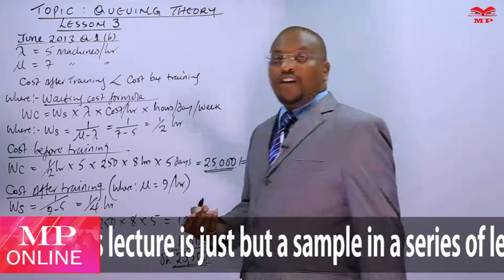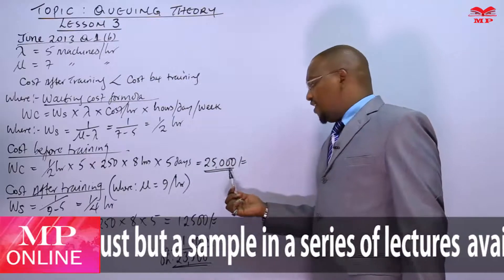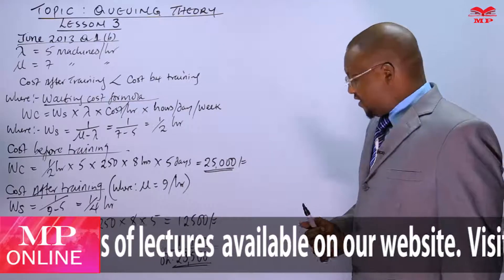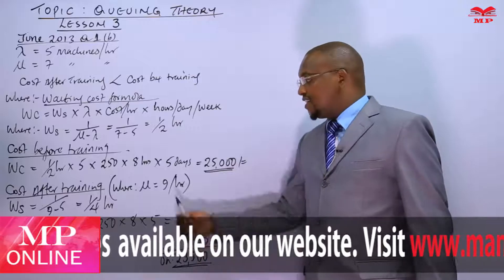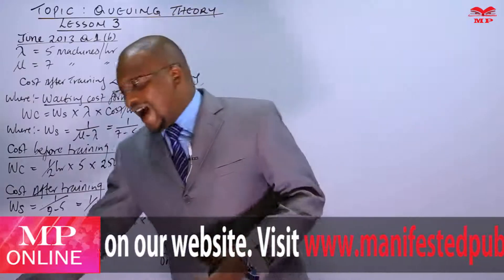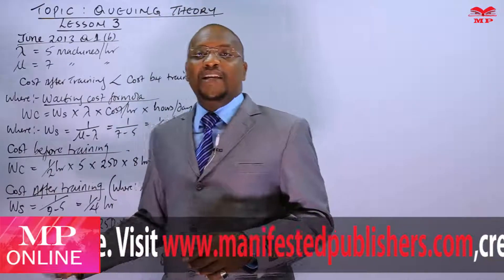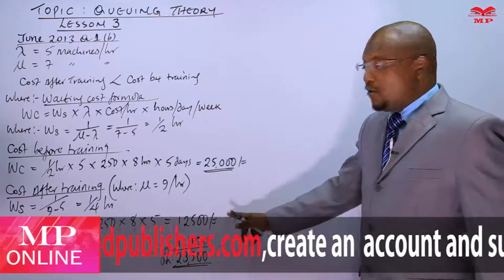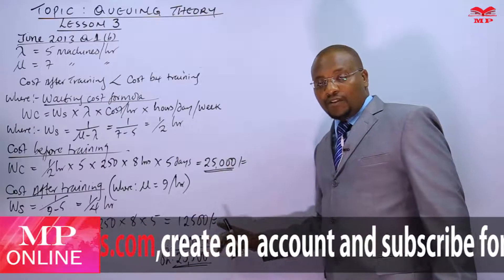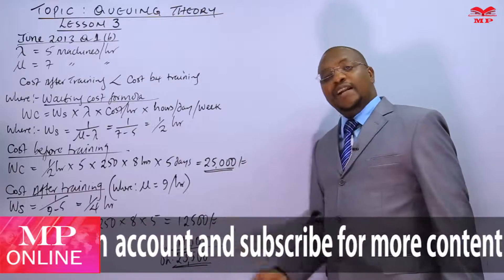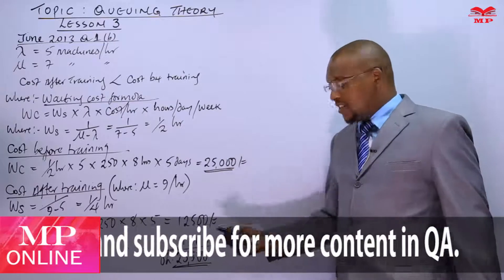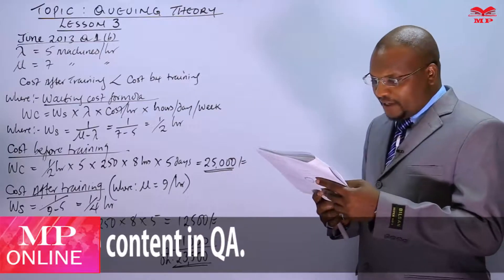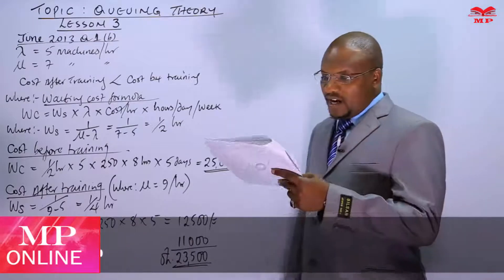Comparing: cost before training is 25,000 shillings; cost after training is 23,500 shillings. Should the technician train? Yes, because the cost is cheaper. Our advice is that the technician should attend the one-week training because despite paying 11,000 cash out, it minimizes waiting costs from 25,000 to 12,500 — a benefit of 12,500. There is no problem spending 11,000 to save 12,500. Therefore, the technician should attend the training.